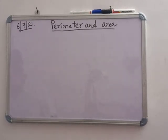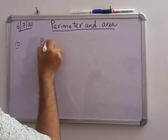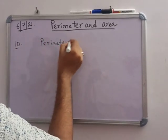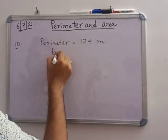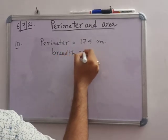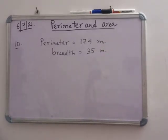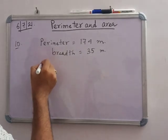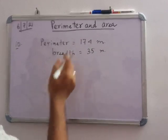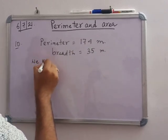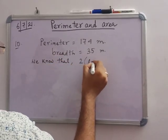In number 10, perimeter of a rectangular plot is given as 174 meter, and breadth is given as 35 meter. You have to find the length and area. So we know that 2 into length plus breadth equals perimeter.